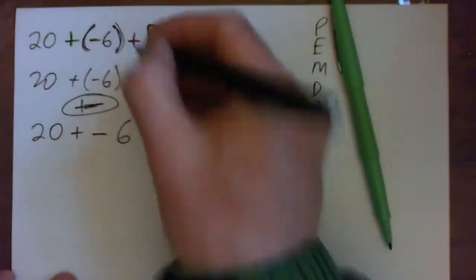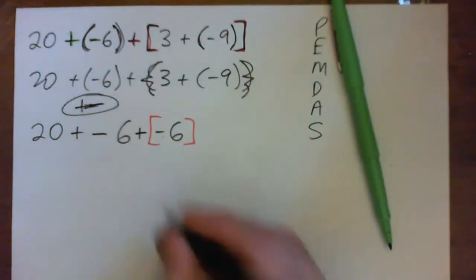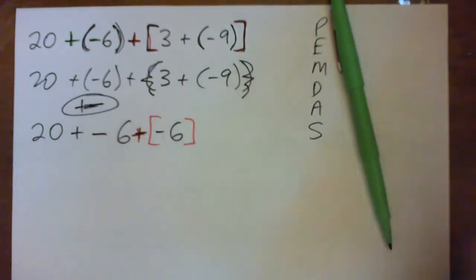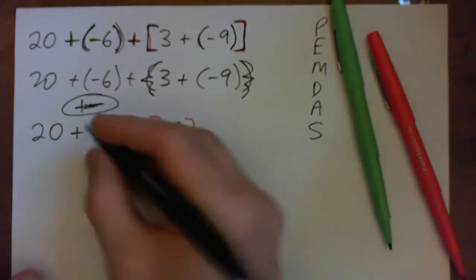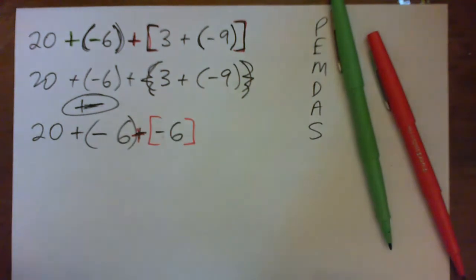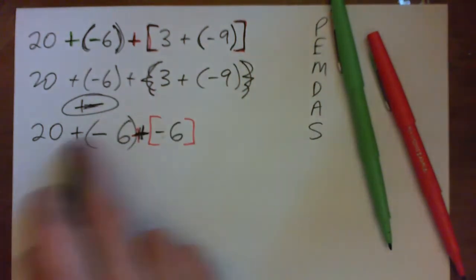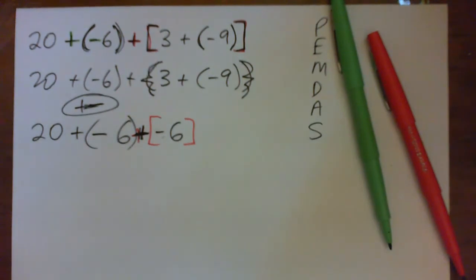We do need this plus sign, though, because otherwise we'd be multiplying. So yeah, that plus sign has to come down for sure. That's what we have. You can put these parentheses in if you want. You don't even need them. You do need this plus sign, though. So we have 20 plus negative 6 plus negative 6. So 20 good guys plus 6 bad guys plus 6 bad guys.